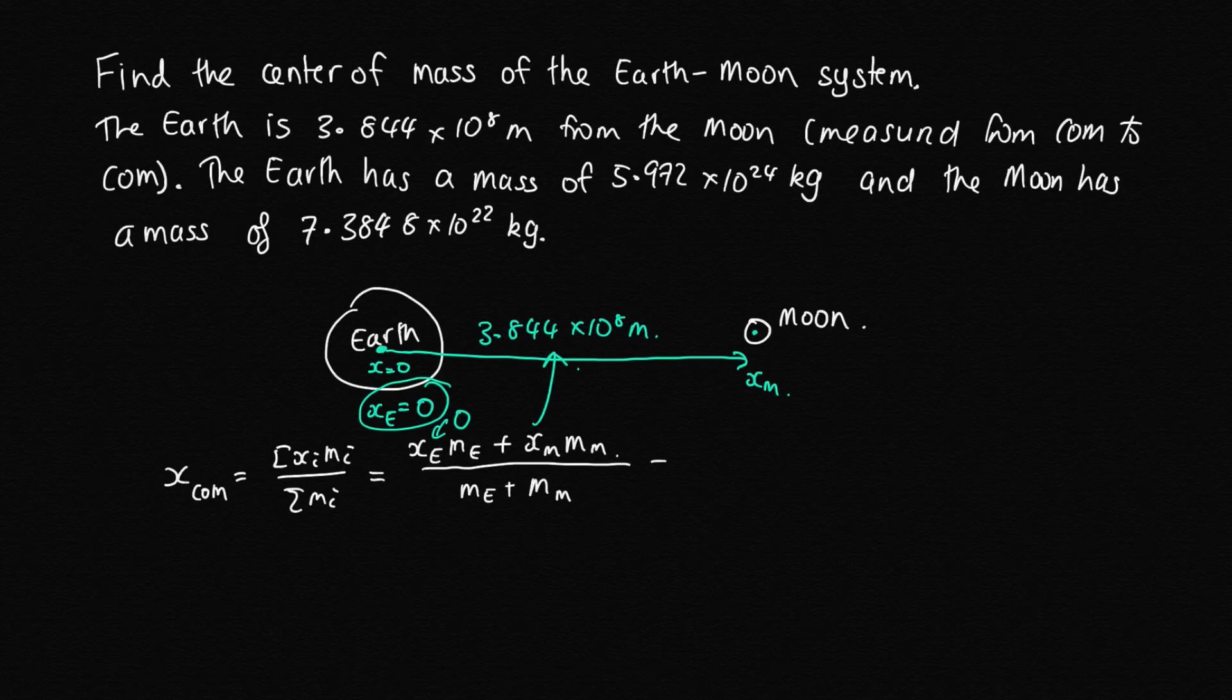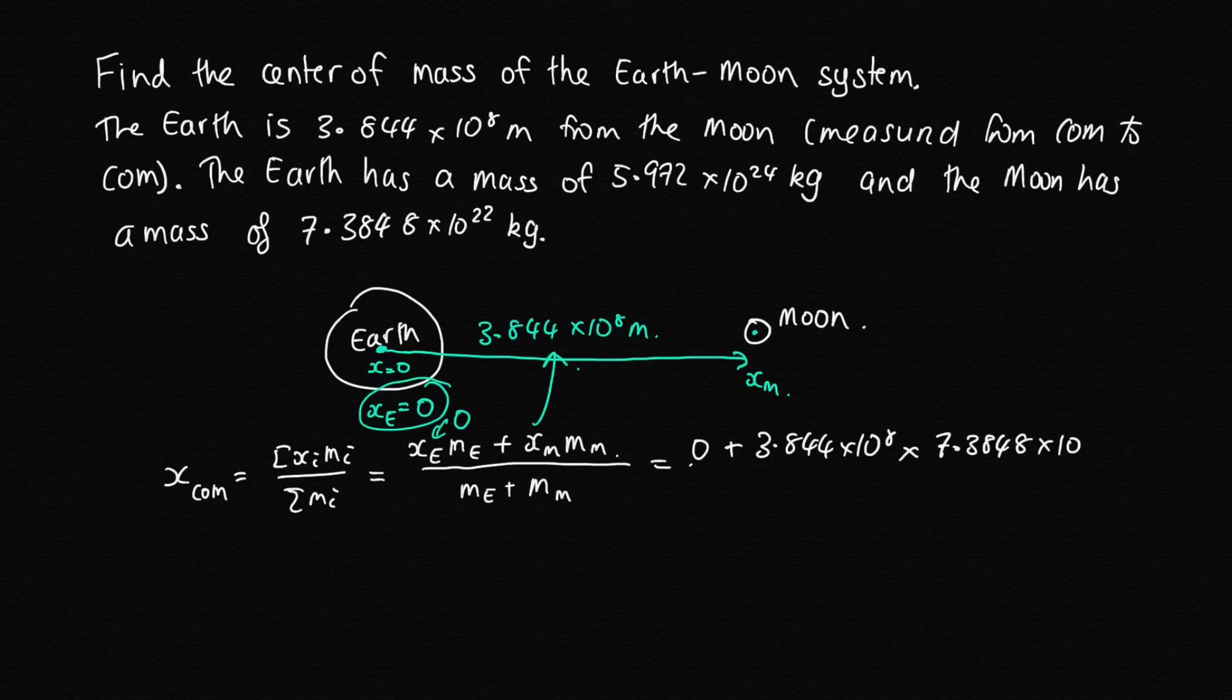What we can do is we can now substitute in. This first term's zero, so we won't bother writing down the mass of the Earth here because we've got a zero to start with. Plus x_m, which is 3.844 times 10^8 times the mass of the Moon, so 7.3848 times 10^22.